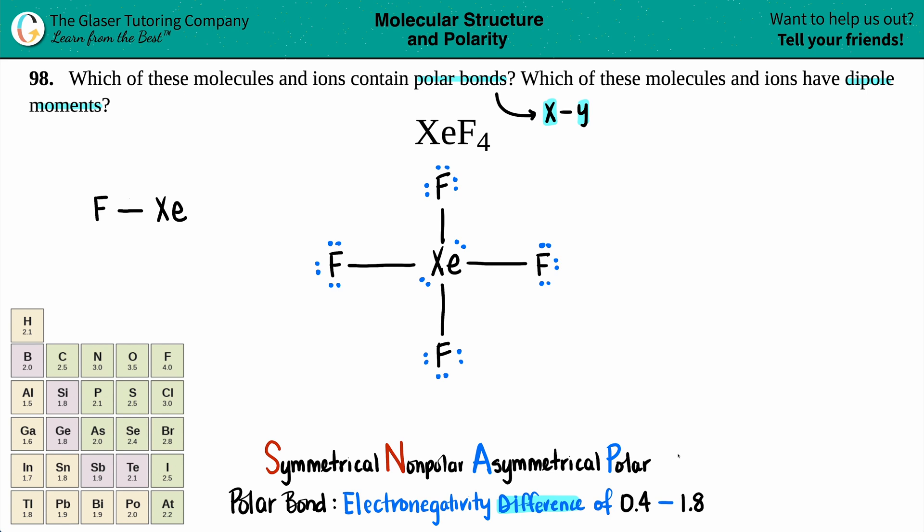So we just have to find the electronegativities of fluorine and xenon. Now, fluorine is right here. Fluorine is the most electronegative element. It has an electronegativity of 4.0. And xenon, sorry guys, I forgot to put xenon on here. But if we go by our electronegativity rules, xenon should be right next to iodine. And as you go from left to right, you are increasing in electronegativity. So xenon should have a little bit more electronegativity than iodine. And it does, if I look on my periodic table, it's got a 2.6.